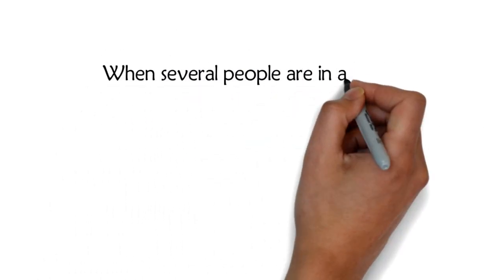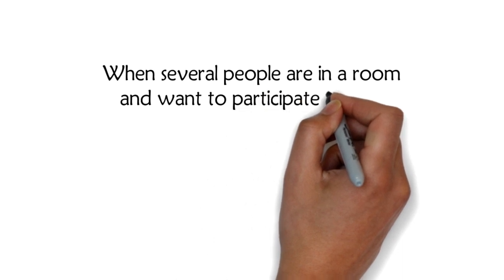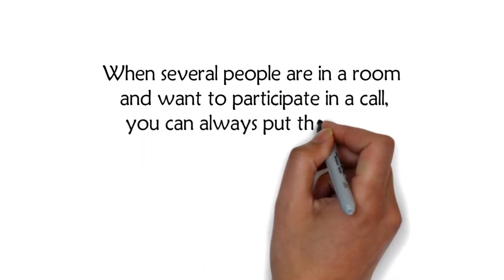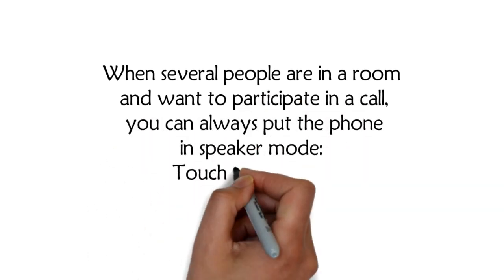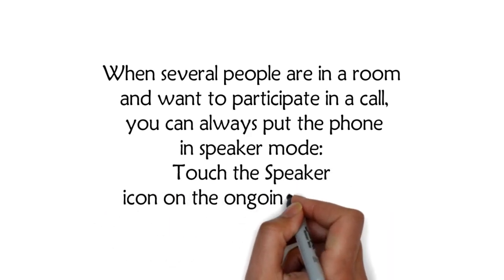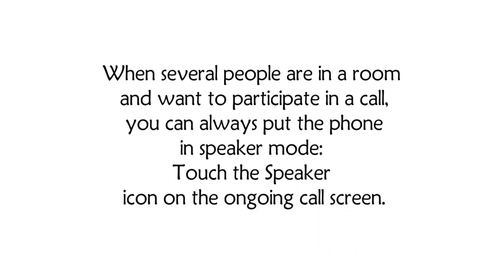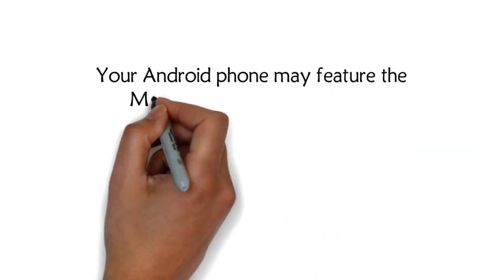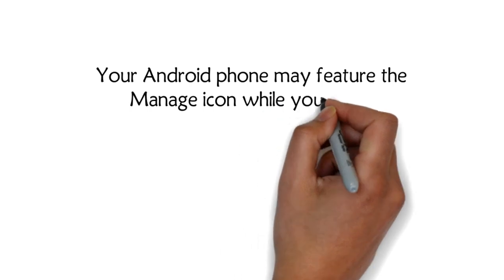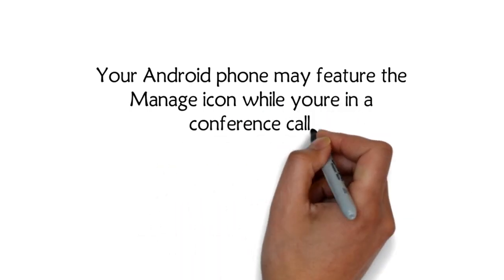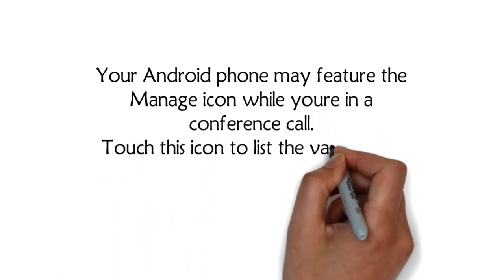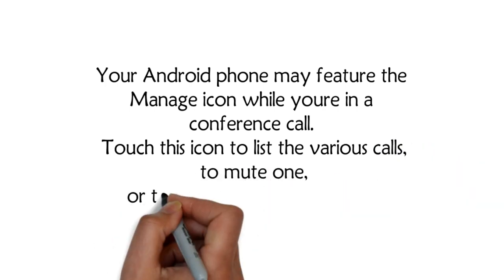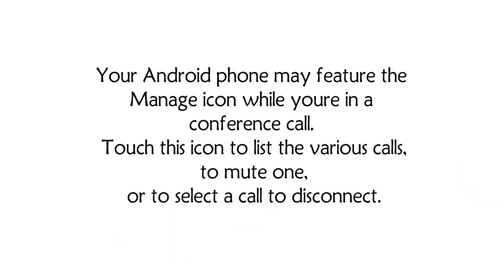When several people are in a room and want to participate in a call, you can always put the phone in speaker mode. Touch the speaker icon on the ongoing call screen. Your Android phone may feature the manage icon while you're in a conference call. Touch this icon to list the various calls, to mute one, or to select a call to disconnect.